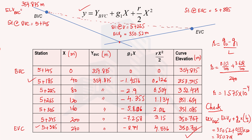This is how a problem related to the sag curve is solved to determine the elevation of different stations on the vertical curve using the parabolic formula derived in previous videos. Thank you for watching. I hope to see you in the next coming videos.